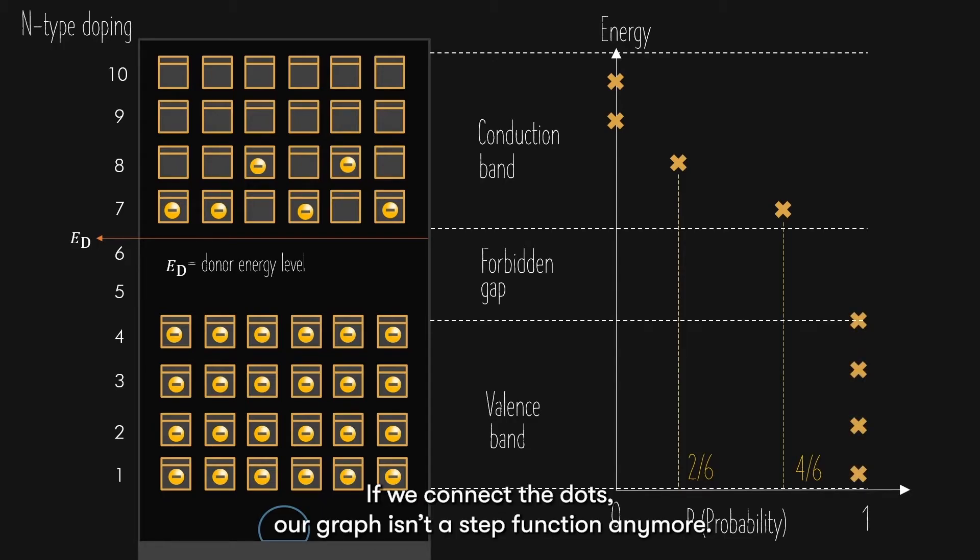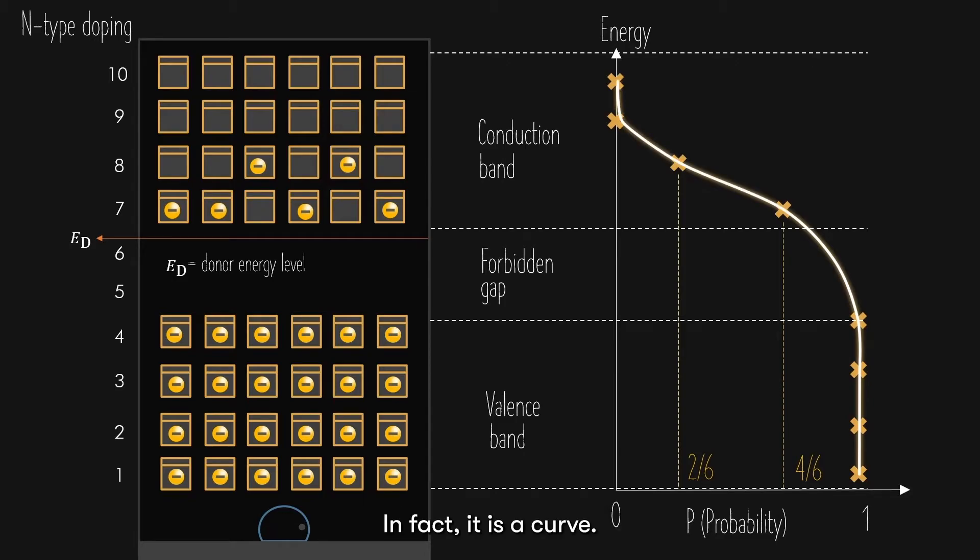If we connect the dots, our graph isn't a step function anymore. In fact, it is a curve. As we go higher and higher up the energy level, the probability of an electron to fill the unit at that particular energy level decreases gradually as energy increases. Because again, the chances of electrons occupying higher energy levels get lesser and lesser.